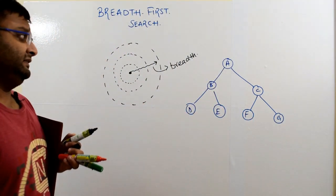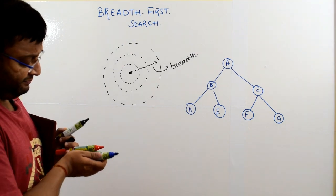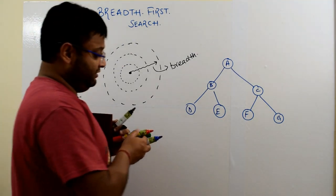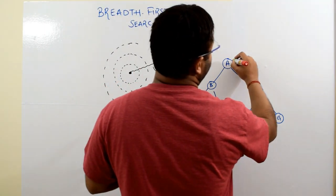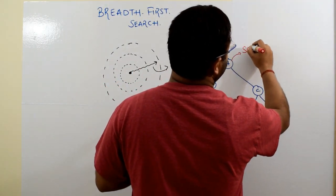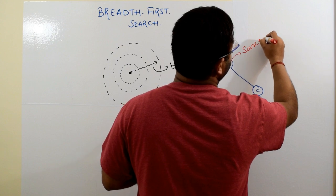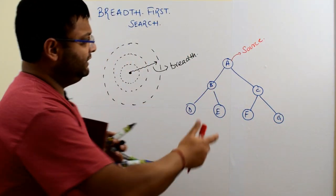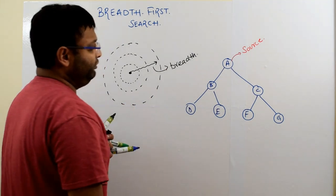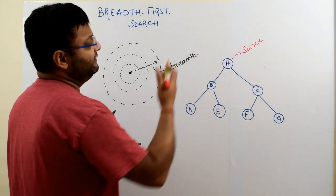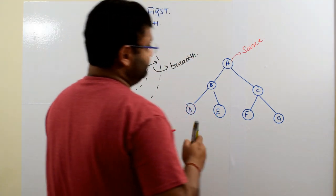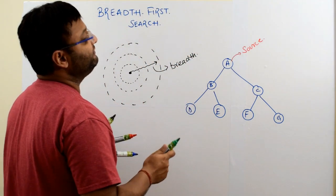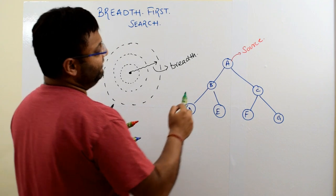Now, if I ask you that, how would you perform a breadth first search on this with source as A? So A will be your source node. Now, keeping this analogy in mind, you will try to answer it in this way that from the source, some disturbance will travel and it will travel uniformly.